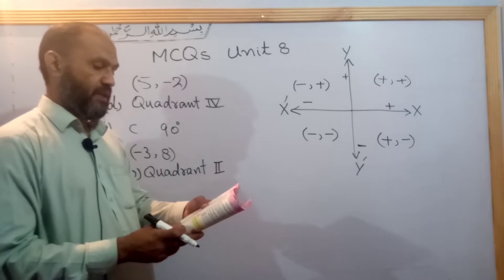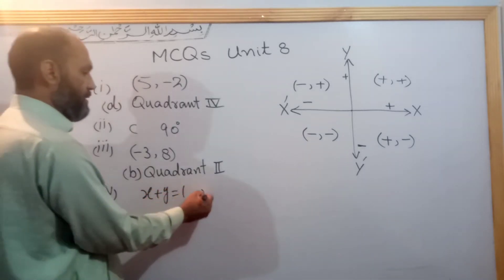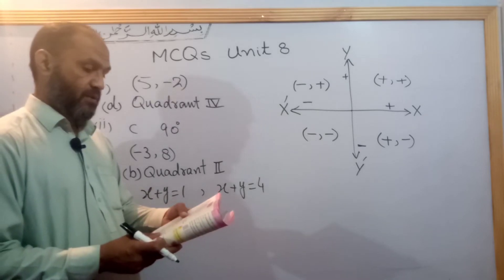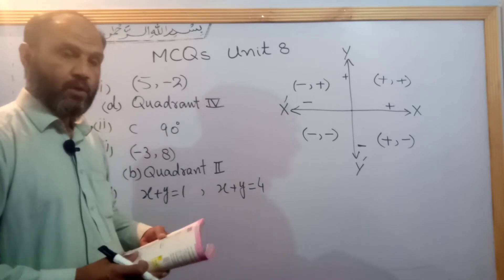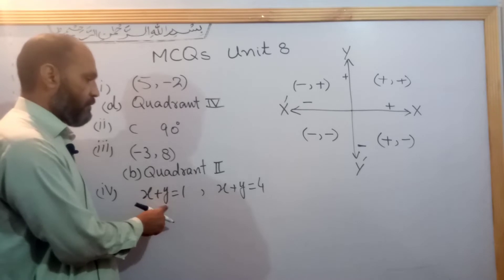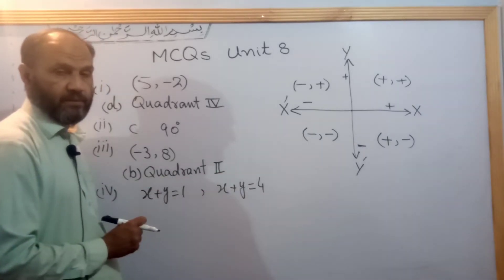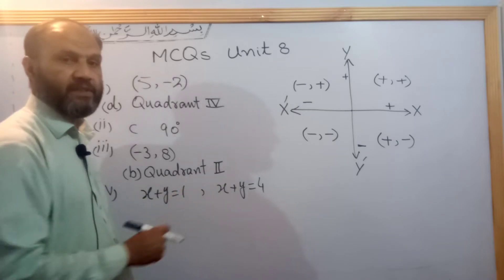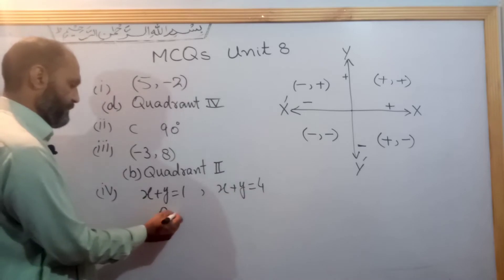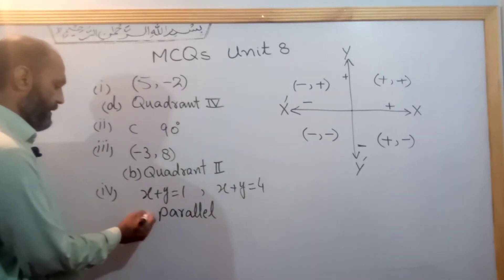The lines represented by the equations x + y = 1 and x + y = 4. Looking at these two lines, are they perpendicular or parallel? Remember: if the x-coefficients are the same and the y-coefficients are the same, then the two lines are parallel to each other. Since both equations have the same coefficients for x and y, these lines are parallel. The answer is option A.